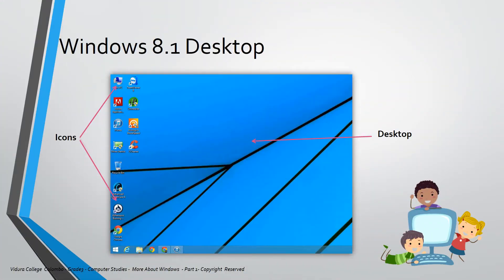Let's see the first screen of a computer. This is called the desktop. You can see the icons on the desktop — My Computer, Recycle Bin, Google Chrome, and so on.